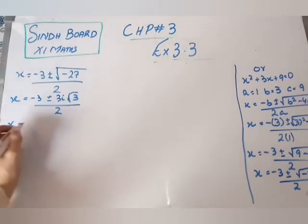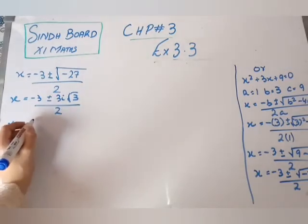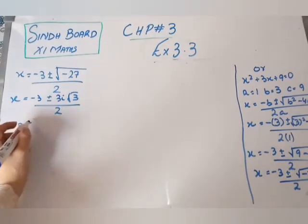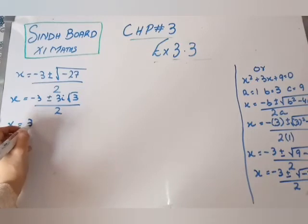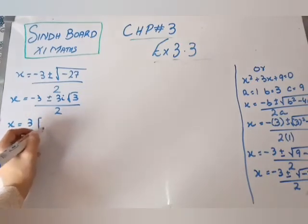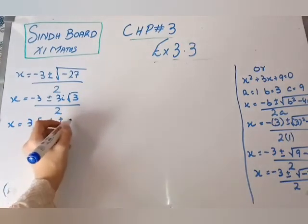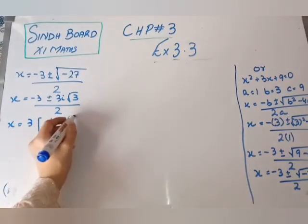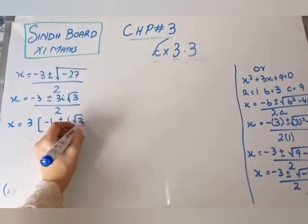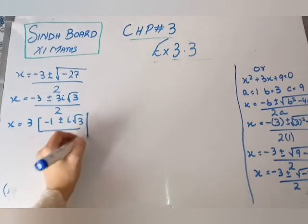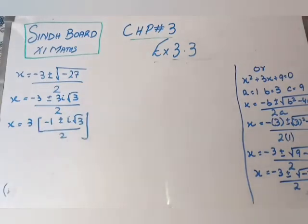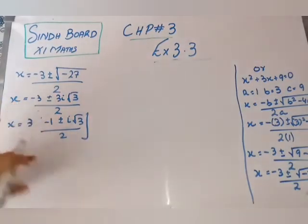Iota is used here so that we can take out the minus sign and get a positive value inside. We take 3 as common from under the root, so minus 1 comes out, giving us plus or minus iota under root 3, upon 2.